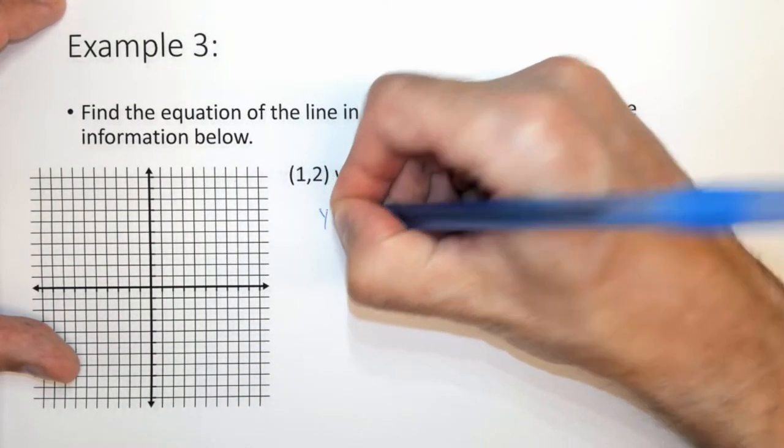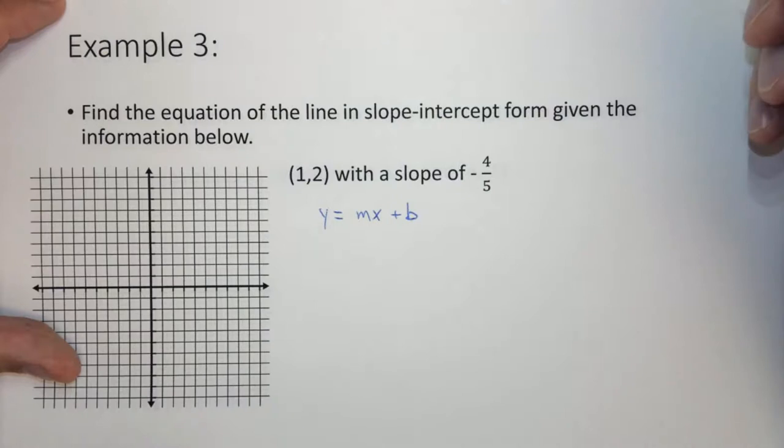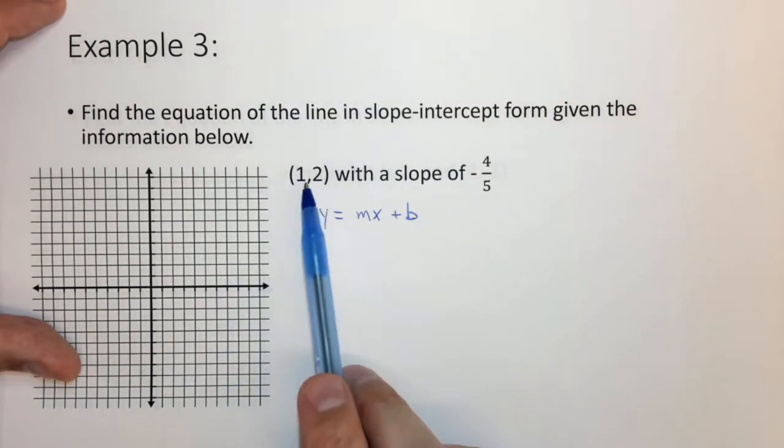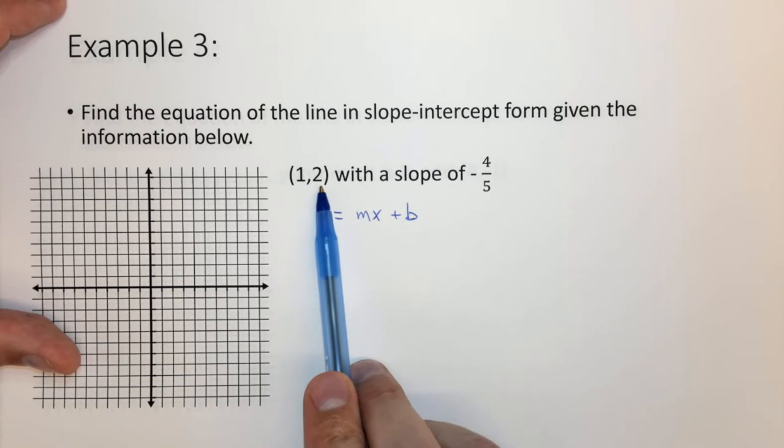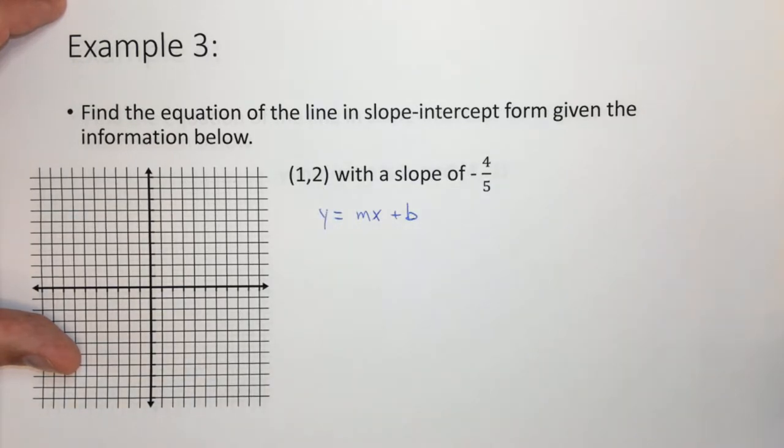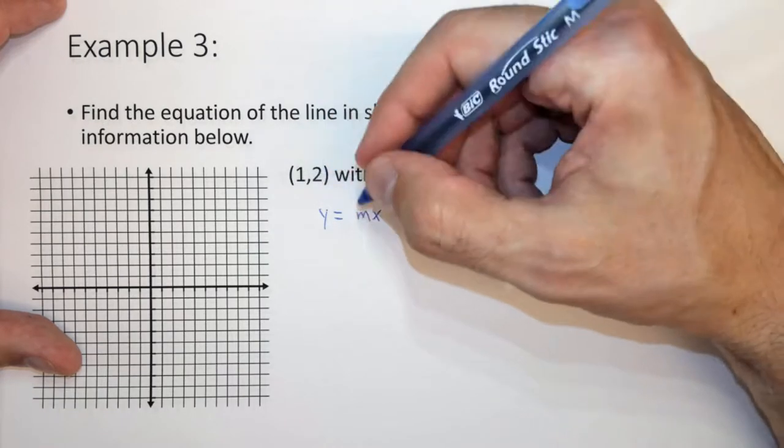It turns out we know a point of x, we know a point of y, and we know the value of the slope. We can solve for b. So we want to plug in what we know.